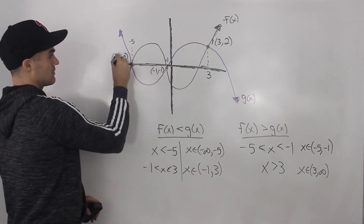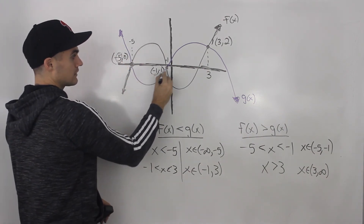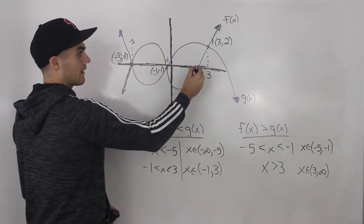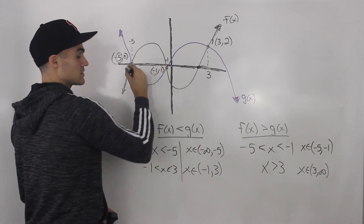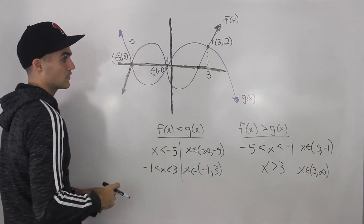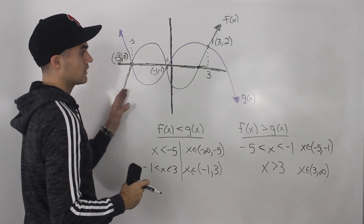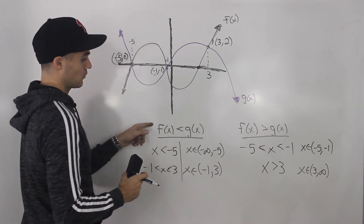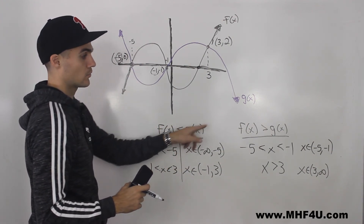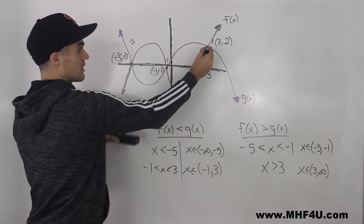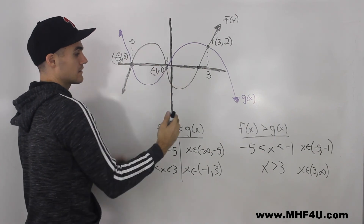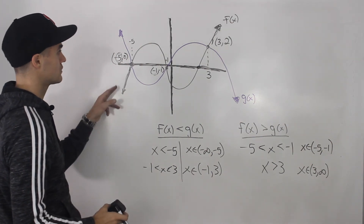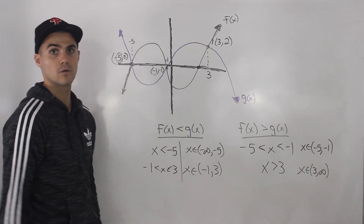The points of intersection are at x equals negative five, x equals negative one, and x equals three. We don't really care about the intercepts of the individual functions — they may give those to you just to trick you. We're not looking for when a function is greater than zero or less than zero; we're looking for when one function is less than or greater than the other. So look at the points of intersection — those x-values tell you the intervals to examine, then just determine when each function is above or below the other.